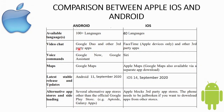For video chat, Android uses Google Duo and other third-party apps. iOS uses FaceTime with Apple devices and also supports third-party apps. The voice command assistant on Android is Google Assistant (formerly Google Now), while iOS uses Siri. For maps, Android defaults to Google Maps, while iOS defaults to Apple Maps, though Google Maps is also available on iOS.